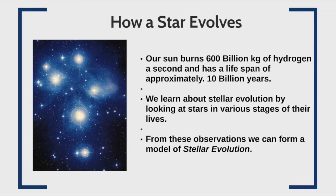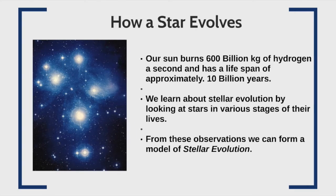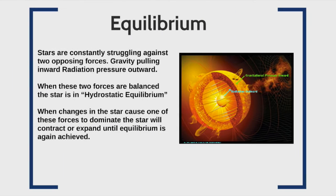My own Sun is burning 600 billion kilograms of hydrogen every second and will have a lifetime of about 10 billion years — I can judge this from looking at the other stars in the sky. So how do these stars work? We've already talked a little bit about hydrostatic equilibrium in stars.